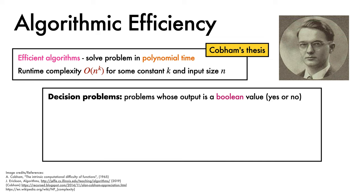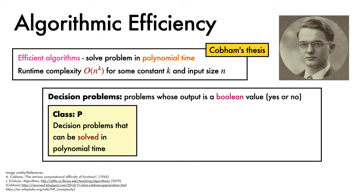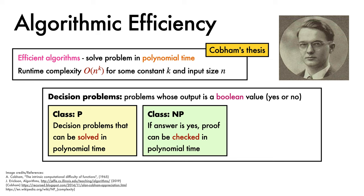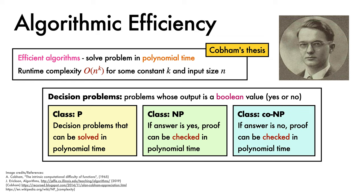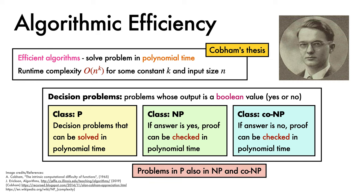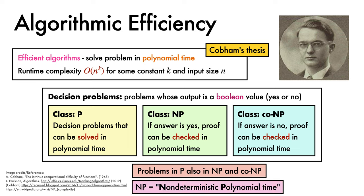Three particularly widely used classes of decision problems include P, the class of decision problems that can be solved in polynomial time; NP, the class of decision problems where, if the answer is yes, the proof of the answer can be checked in polynomial time; and co-NP, the class where, if the answer is no, the proof can be checked in polynomial time. Every decision problem in P is also a member of NP and co-NP, because if you can solve a problem in polynomial time, you can certainly check a proof in polynomial time by recomputing the answer from scratch. Note that the name NP technically stands for non-deterministic polynomial time, as NP can also be defined as the set of problems solvable by a non-deterministic Turing machine in polynomial time.